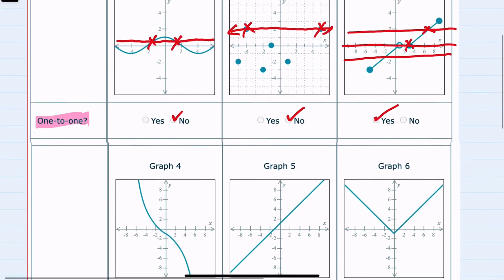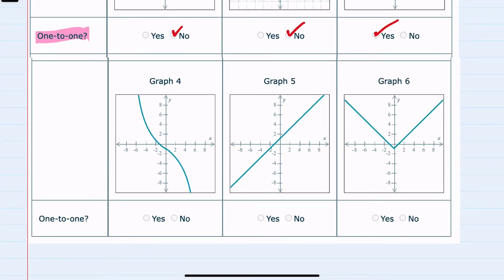Looking at graphs four, five, and six. Graph four, any number of horizontal lines would only cross once. So yes, it is one-to-one.